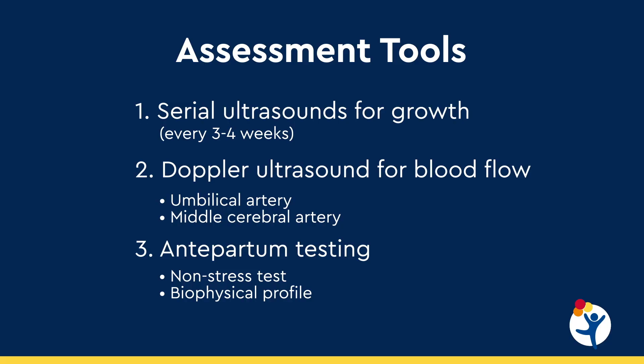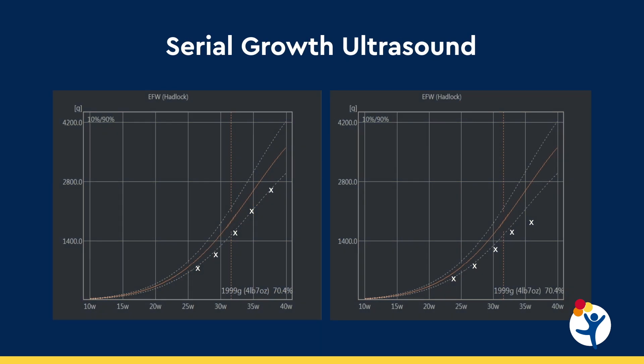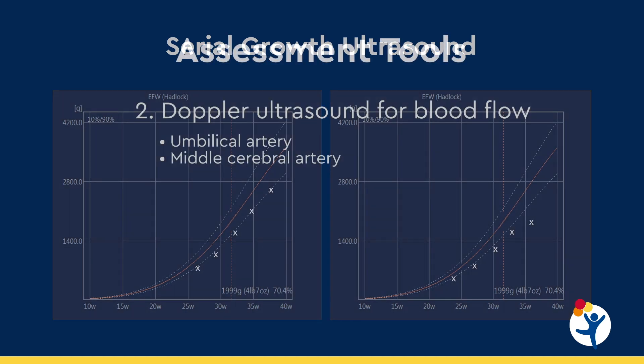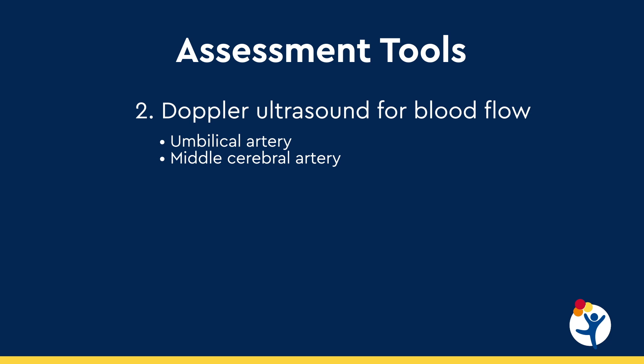We have a variety of tools to assess fetal well-being and determine whether a fetus is developing further problems. These include serial ultrasounds for growth every three to four weeks. These graphs show serial growth for two different fetuses — one showing a small fetus staying on its own growth curve throughout gestation, and another showing a fetus initially on its curve and then falling off. We also use Doppler ultrasound in the umbilical artery to reflect resistance to blood flow within the placenta, and Doppler velocimetry in the middle cerebral artery to assess for low blood oxygen levels or hypoxemia.